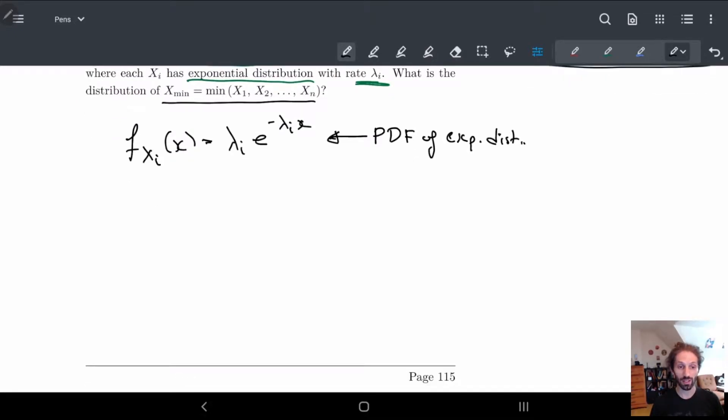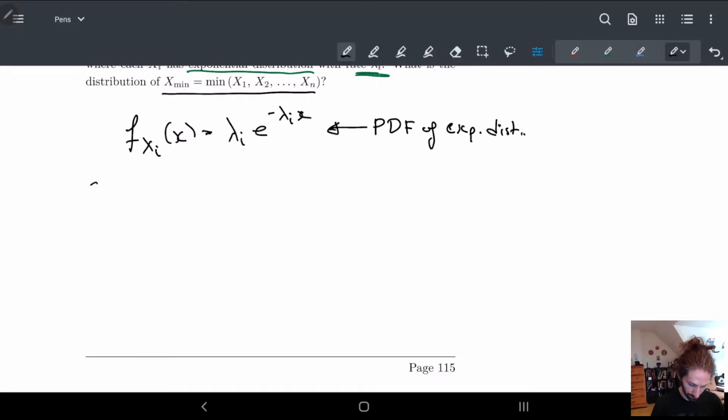Alright, so in order to calculate the CDF, F_Xᵢ(x), this is the probability that Xᵢ is less than or equal to x. So here we have the integral from negative infinity to x of λᵢ e^(-λᵢx) dx. This shouldn't be too hard to do for integrals. This should be things we're kind of used to. This should not be infinity, this is zero because we're exponential so we always start at zero.